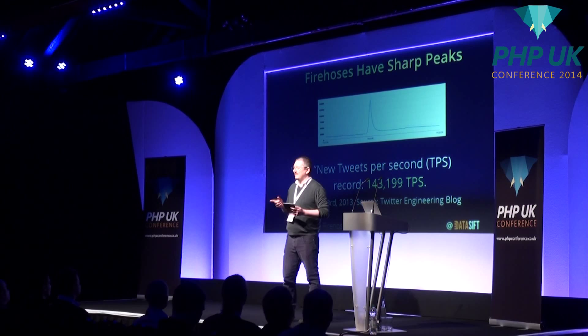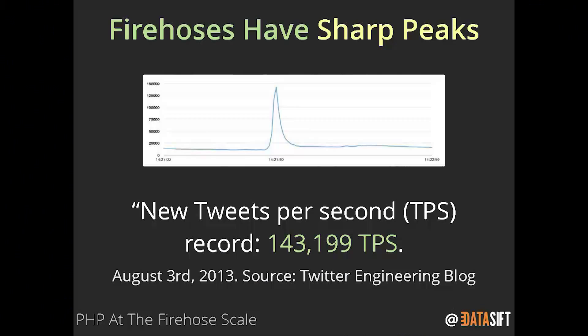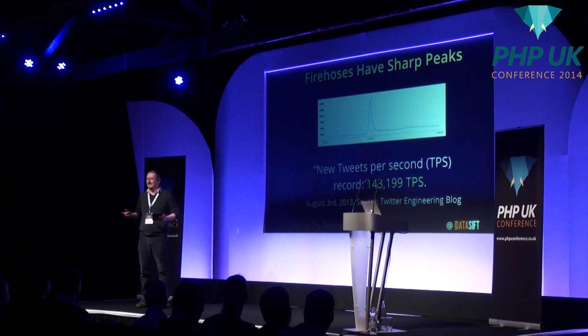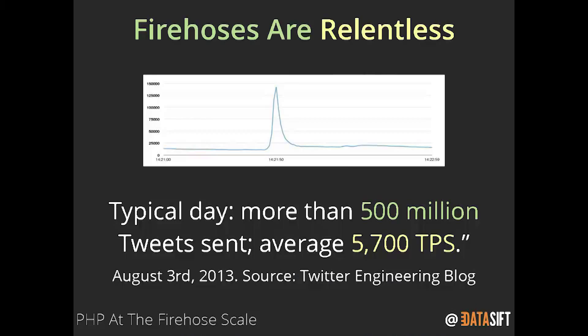When you're consuming fire hoses, you need extreme reliability. And you've got to be able to scale to cope with the data. PHP is perfect for that. Here's some data from Twitter's engineering blog showing their largest peak last year, on the 3rd of August. It goes from about 15,000 a second all the way up to 143,000 tweets a second - that's a 25 times increase in traffic. Just like that. No warning, no one could know it was coming. In a typical day, over 500 million tweets are published via the fire hose - that's a working average of 5,700 tweets per second.